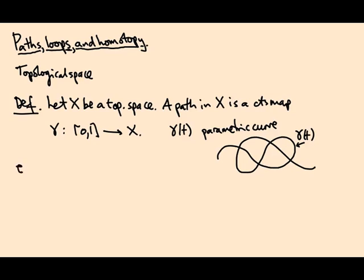For example, you could have gamma(t) = (t, 0). That's a path in the plane, so X is the plane R^2. This is a continuous map that starts at the origin t=0 and moves along the x-axis until it gets to the point (1,0) at time one.